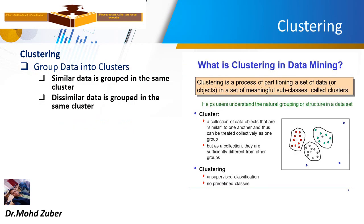Now we are talking about clustering. What is clustering in data mining? Clustering is the process of partitioning a dataset into groups called clusters. Similar data is grouped into the same cluster, and dissimilar data is grouped into other clusters.